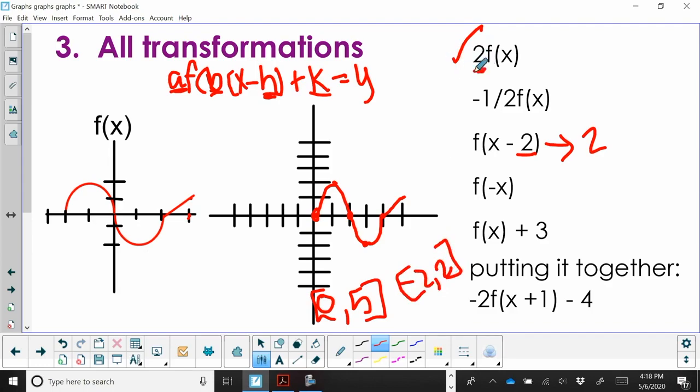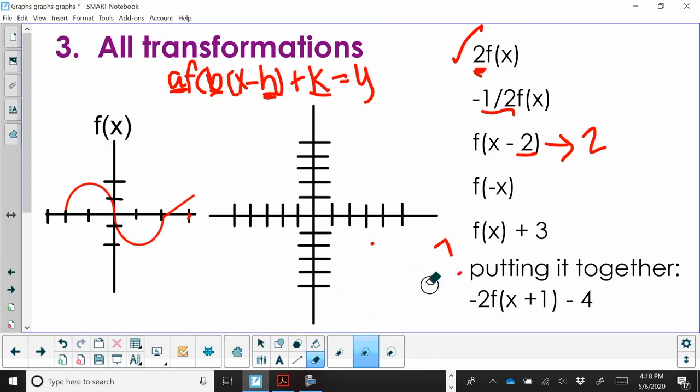So the a value changes your range. The h value changes your domain. So what would k do? Wait a minute, the next one, it looks like we're looking at a negative x. So if you negate your x, what's it going to do to your function?